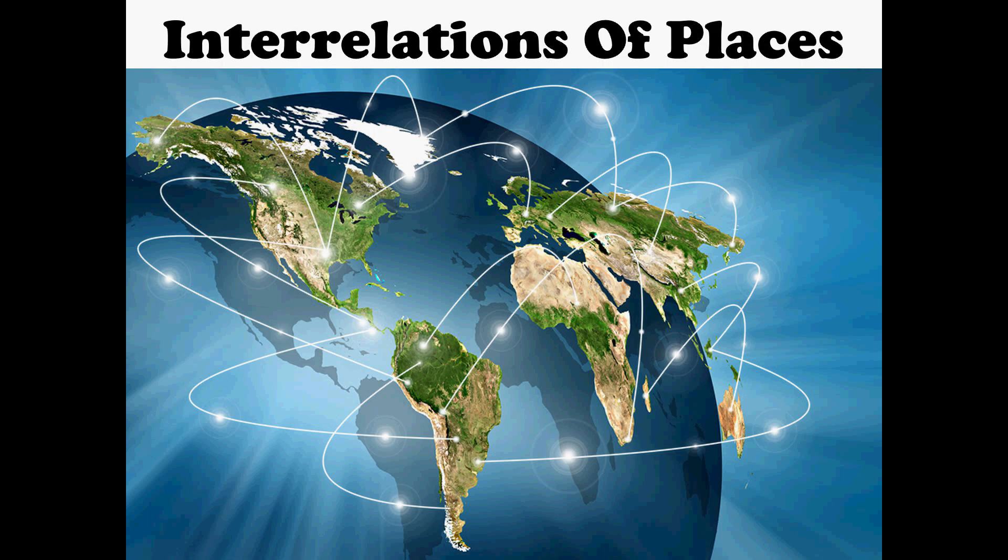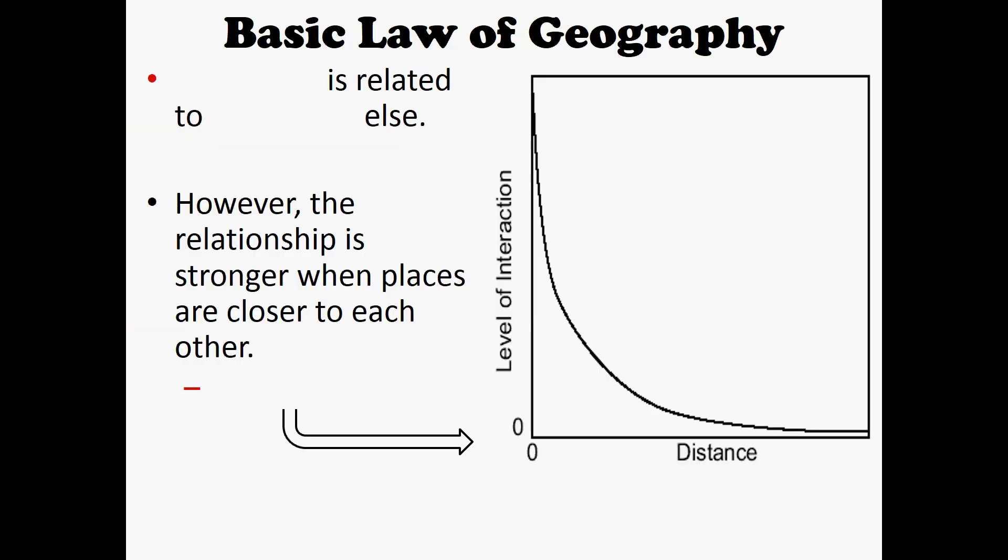Let's get to some terms. We're going to be learning how everywhere in the world is connected, this interrelations of places, and it's essentially broken down by this two-word phrase, distance decay. So what you should know with distance decay is that everything is related to everything else. Now, don't go ahead and dump your boyfriend or girlfriend thinking we're first, second, third, fourth, maybe fifth cousins. Not like that.